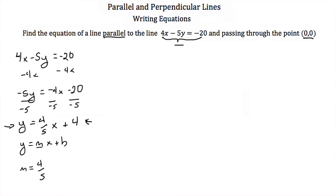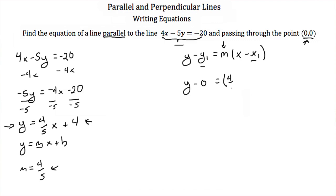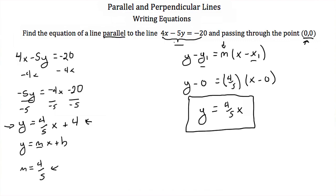If we want an equation of a line parallel to this line, our new line also has to have a slope of 4/5, because parallel lines have the same slope. Now that we have a slope and we know a point, let's use our point-slope form equation to solve for the equation of our new line: y minus y1 equals m times x minus x1. Plugging in 4/5 for slope and the point (0, 0), we get y minus 0 equals 4/5 times x minus 0, which simplifies to y equals 4/5 x. That is the equation of a line parallel to 4x minus 5y equals negative 20 passing through the point (0, 0).